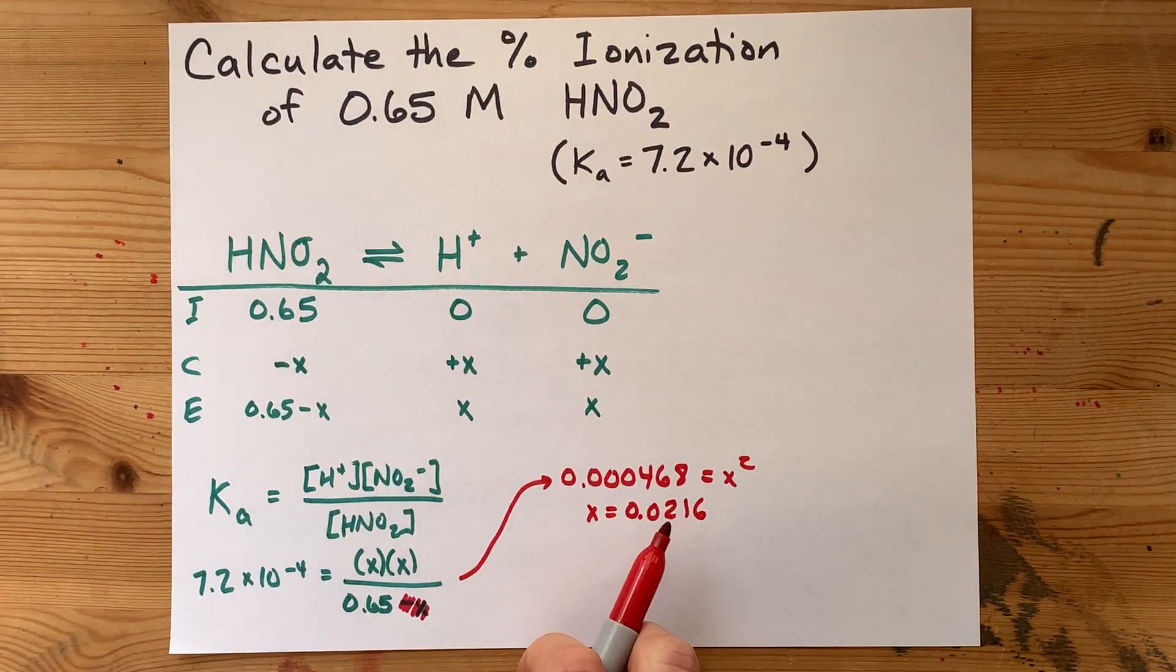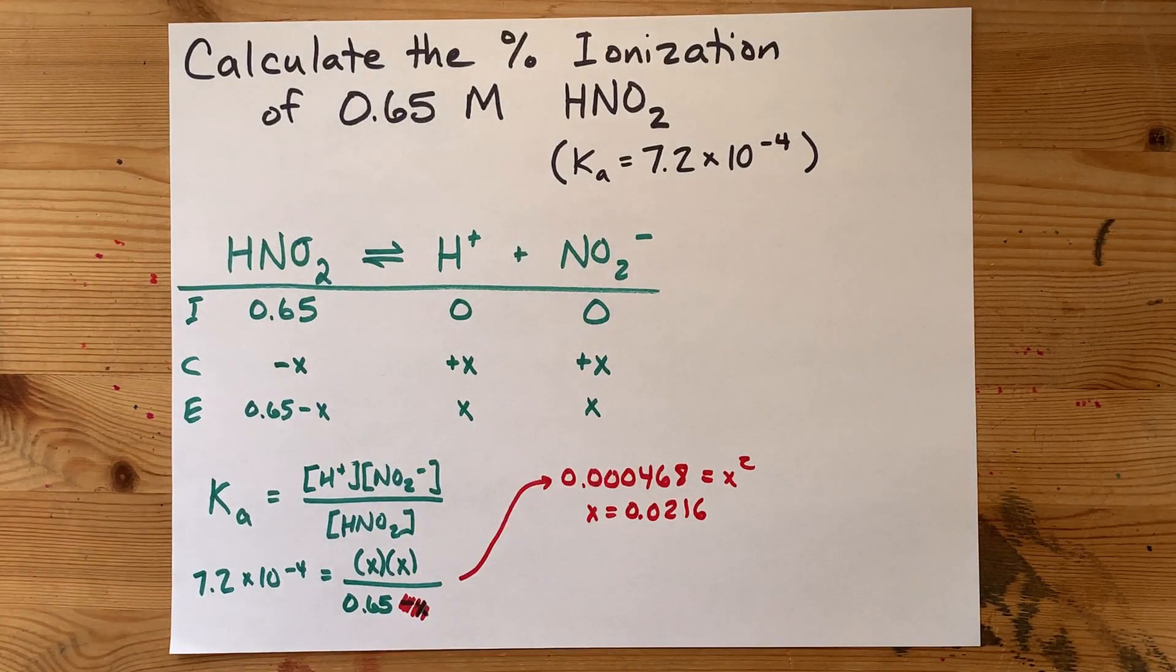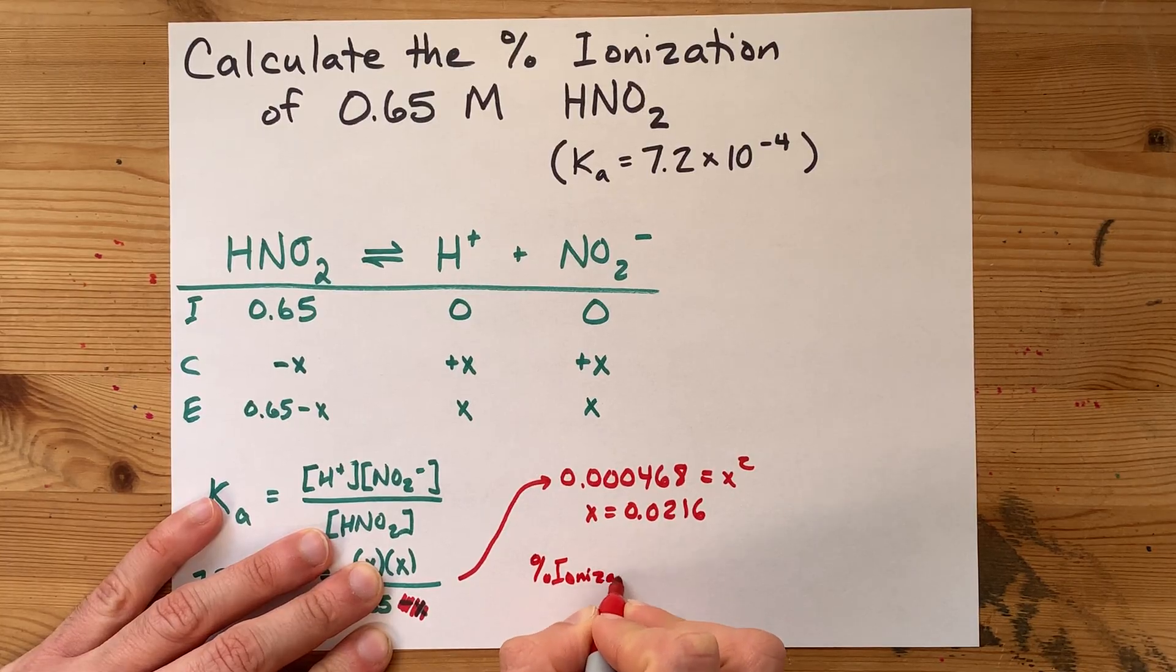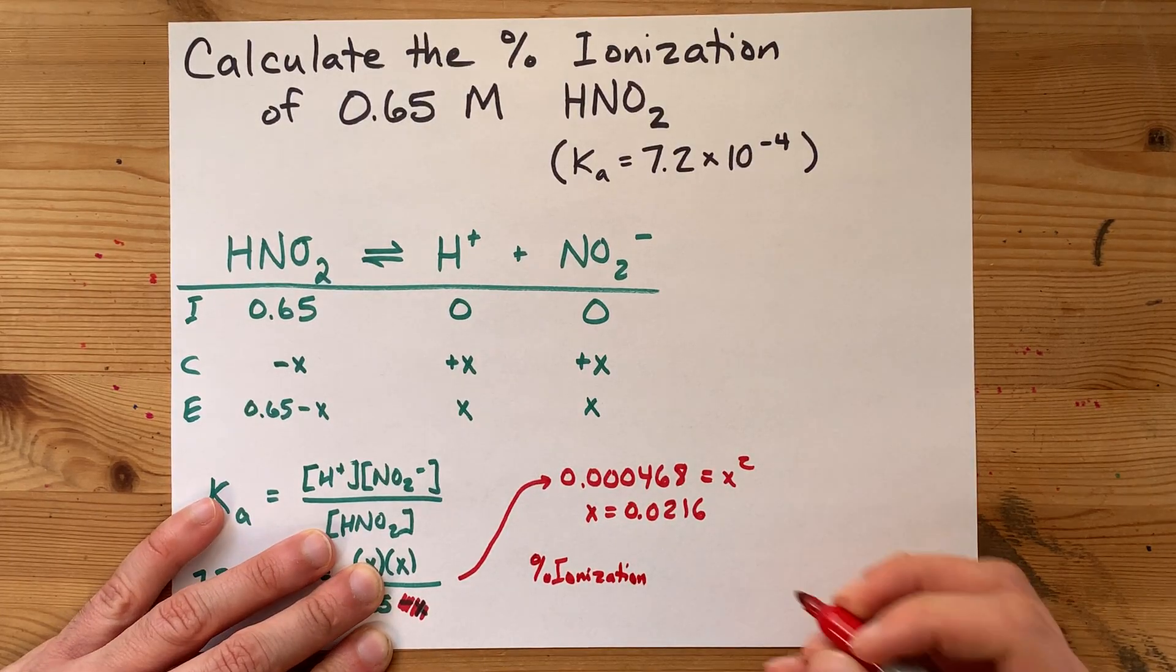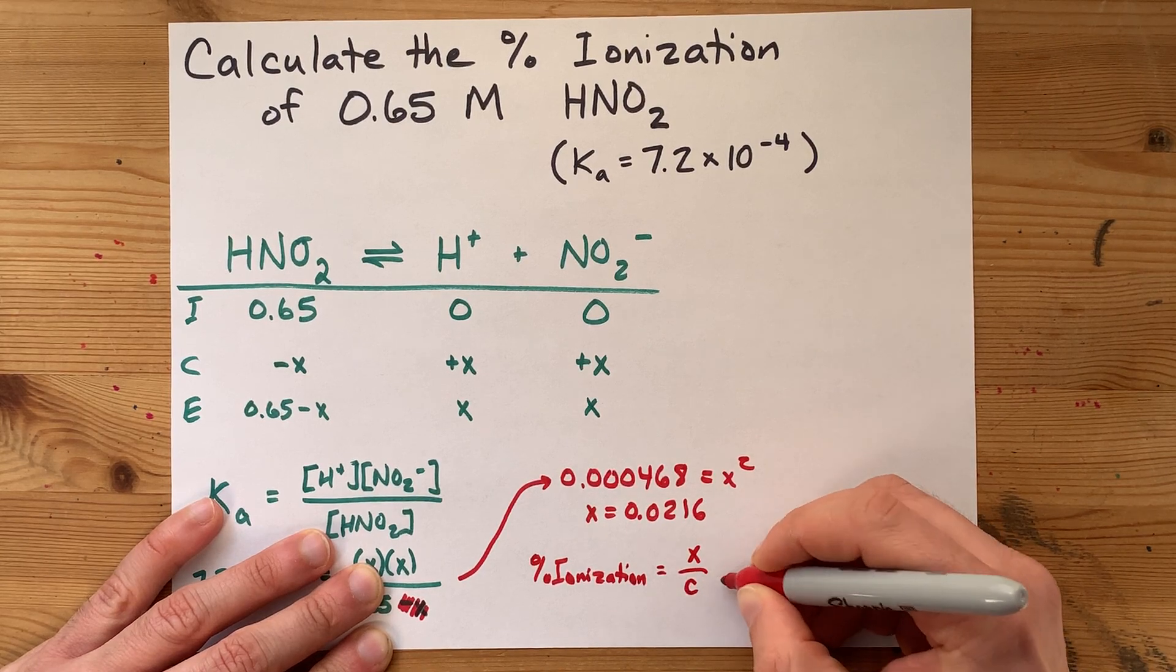That X is the amount of the original weak acid that dissociated. The percent ionization happens to be that value of X divided by the original concentration.